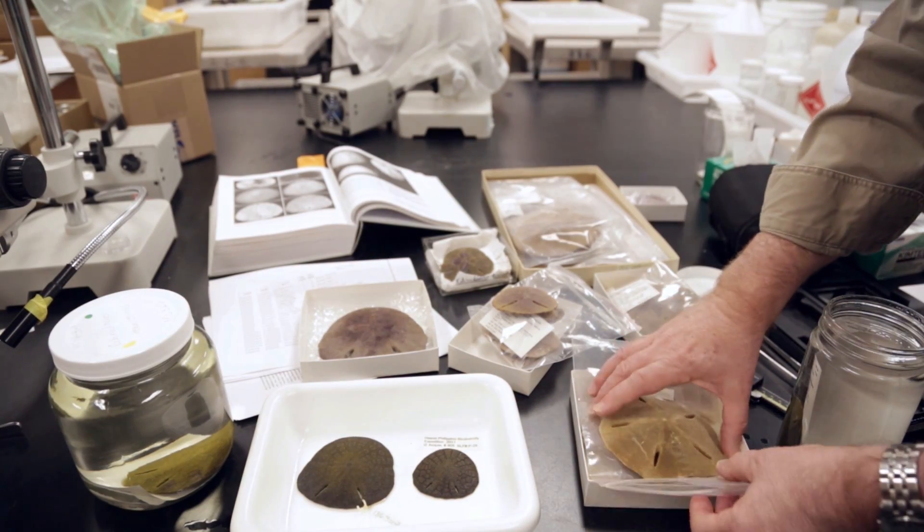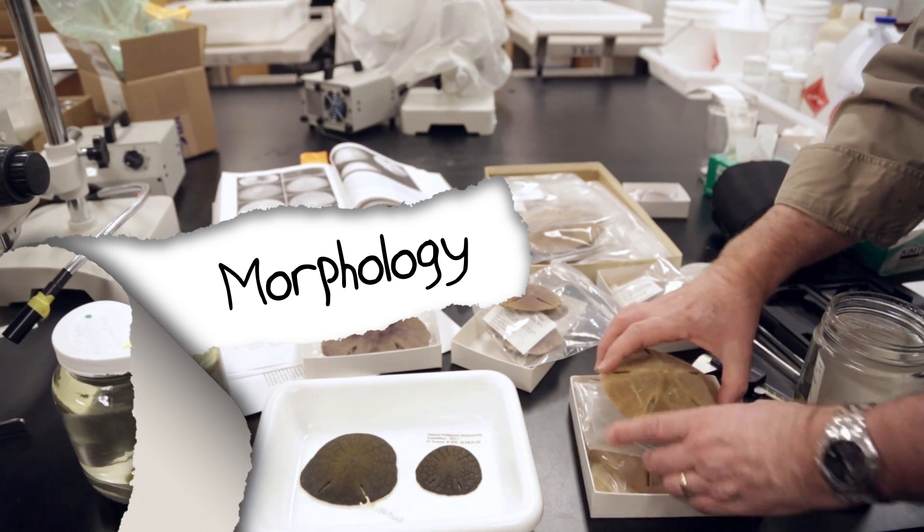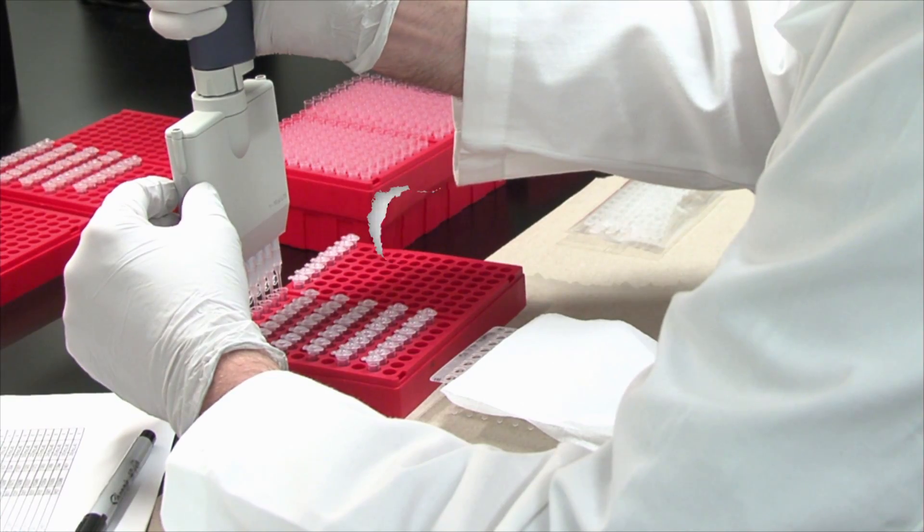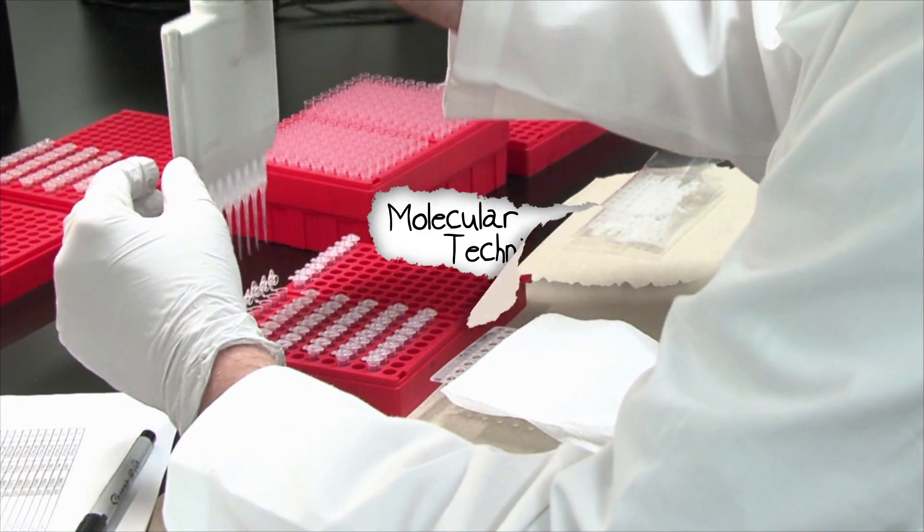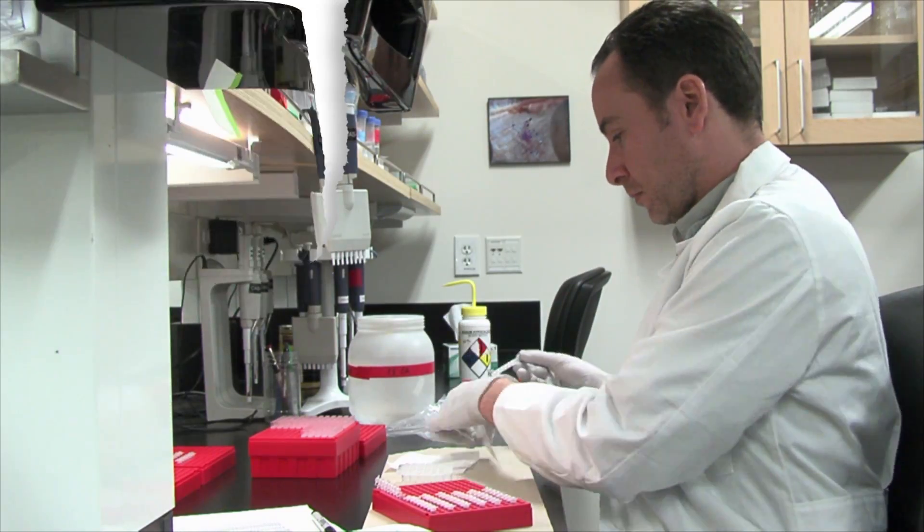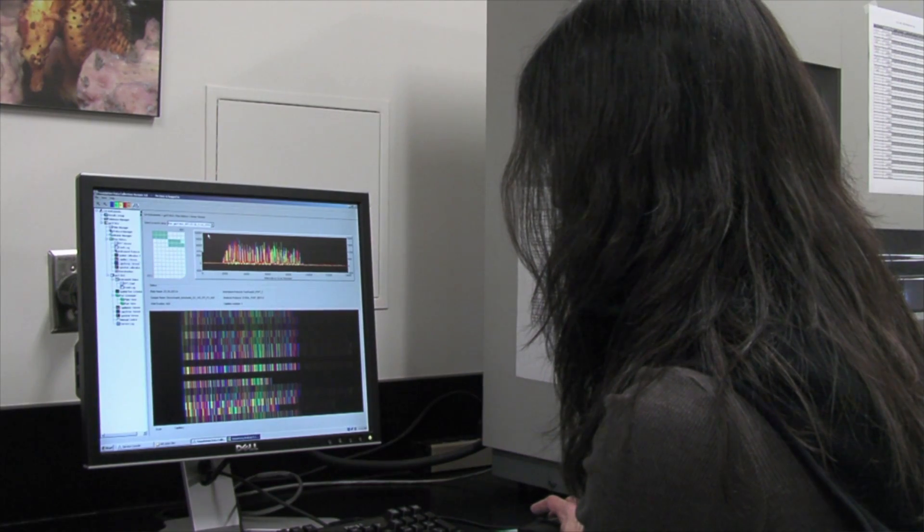Studying the form or shape of organisms is called morphology, and it was the original tool used in identifying species. Nowadays, molecular techniques have been added to the toolbox of identification. Genetic sequencing of an organism's DNA is becoming increasingly important for identifying species.